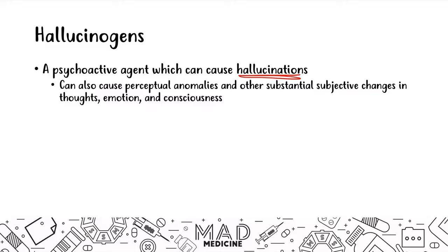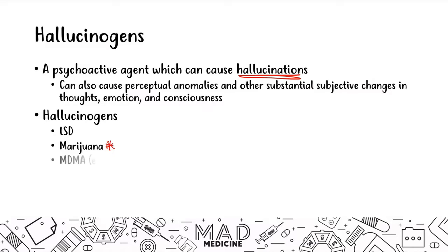The hallucinogens you need to know for Step 1 are LSD, marijuana — and a lot of you might be wondering why marijuana is on the hallucinogen list and not the CNS depressant list — and we'll talk about that. We're also going to discuss MDMA, also known as the street drug ecstasy, and PCP.